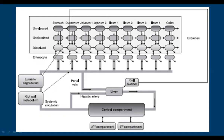Again: stomach, duodenum, jejunum, ileum, and colon — each compartment has unreleased, undissolved, and dissolved drug components. The drug then enters the portal vein or blood circulation. If it is undissolved or undigested, it goes into the excretion model. The rate of change of dissolved drug concentration in each GI compartment depends upon ten processes.